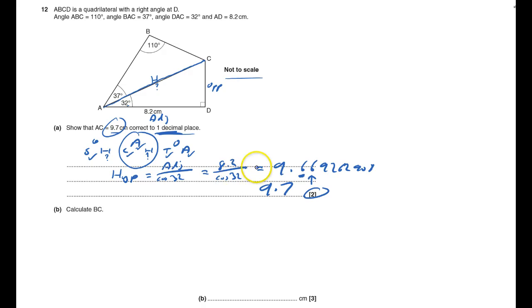Calculate BC. So it wants me to calculate this bit here, but I haven't got a right-angle triangle, so it's going to have to be either the sine rule or the cosine rule. I've just worked out that this one here is 9.669. If you took 9.7, that'd be fine.